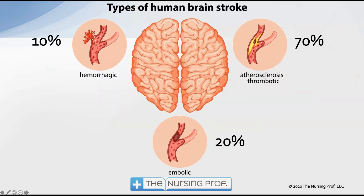When a patient presents and you suspect stroke, consider the type. 70% are caused by atherosclerosis and are thrombotic in nature. Another 20% are embolic — typically from a patient with atrial fibrillation, where stagnant blood flow in the atria forms clots that are thrown to the brain. The third type is hemorrhagic, where bleeding occurs in the brain.